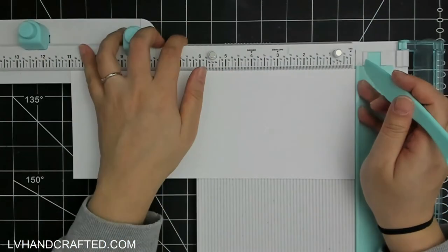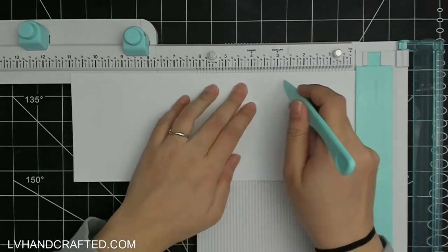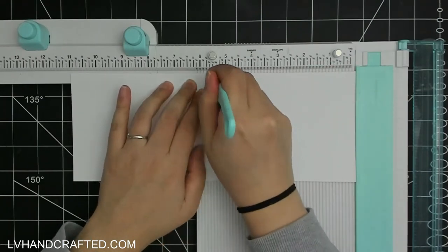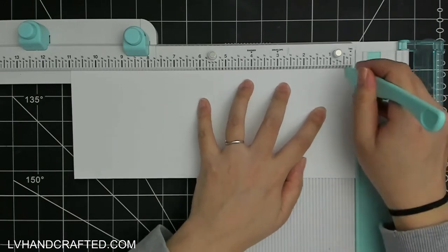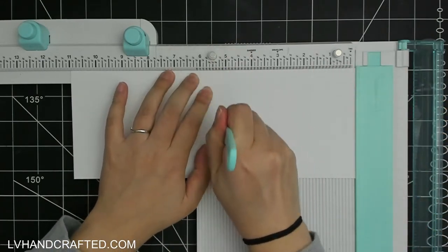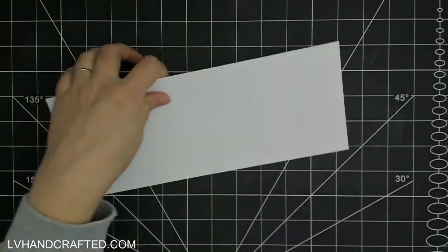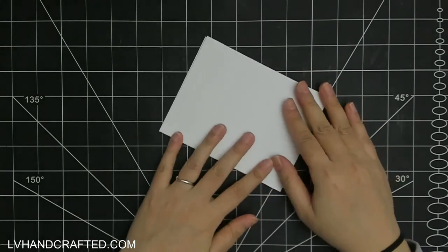You want to cut your card base to 4.25 by 11 inches, and then you want to score at 3/8 of an inch, 1.75 inches, 3.75 inches, 5.125 inches, and 5.5 inches.